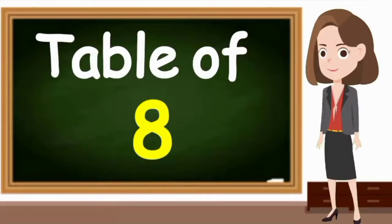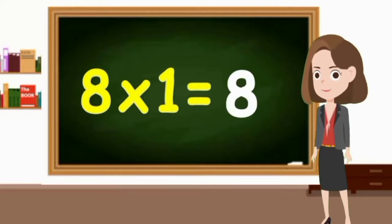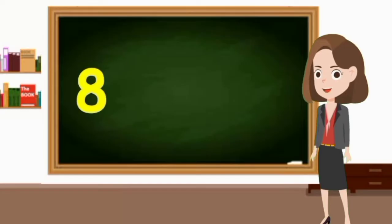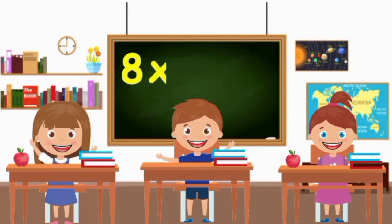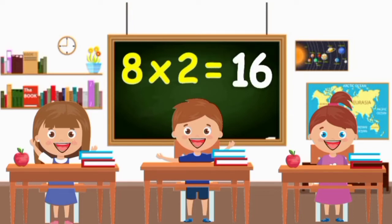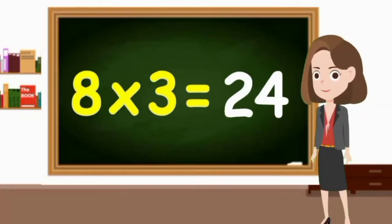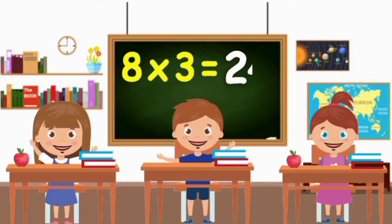Table of eight. Now let's learn the multiplication table of eight. Eight ones are eight. Eight twos are sixteen.